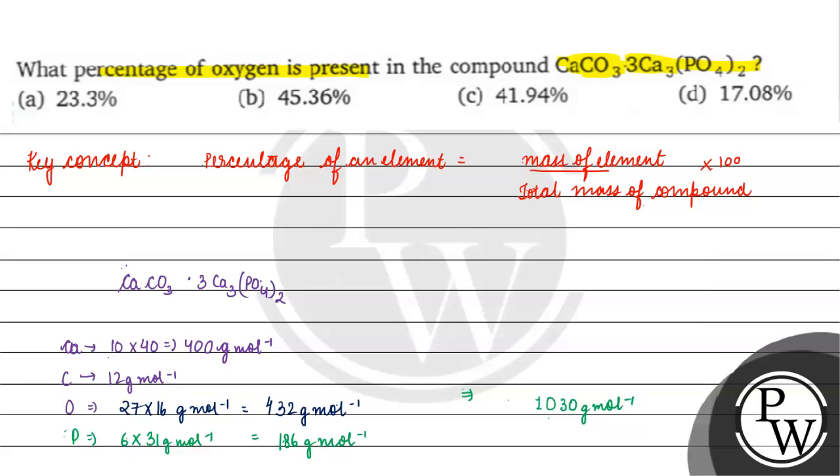So what is it? Mass of molecular mass of the compound. How much mass of element? Four hundred thirty-two. So what will we write here in the box? Percentage of oxygen will be